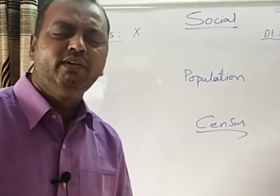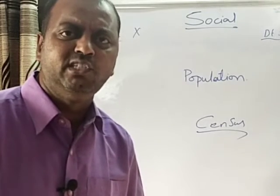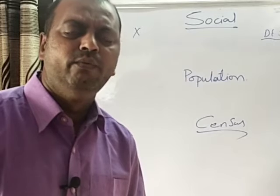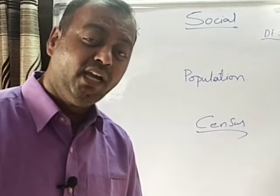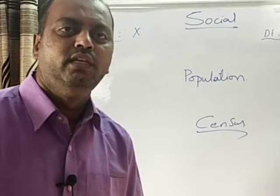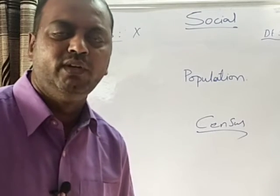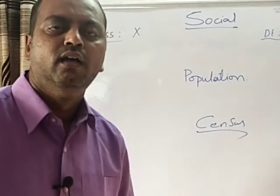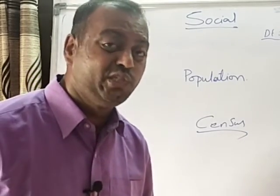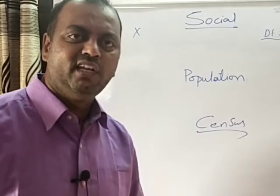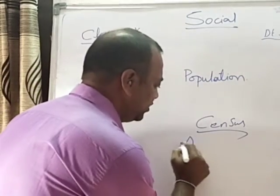There is a table given in the textbook, children, which you need to fill up with information. There are various columns — depending upon those columns, you collect the information from around you and fill up the box. So what does the census show? Census generally shows the age structure.